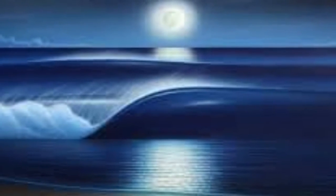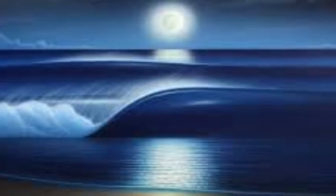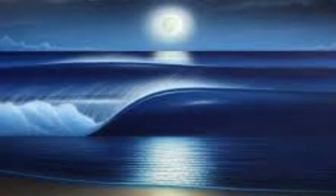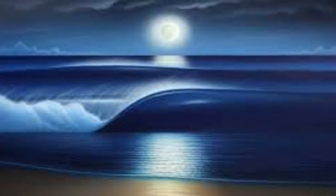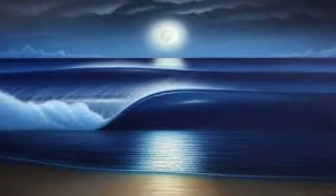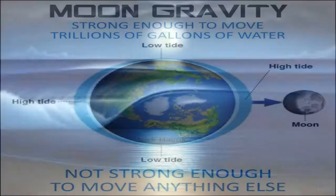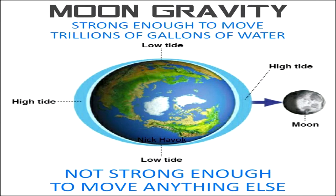Isaac Newton theorized, and it is now commonly taught and believed, that Earth's ocean tides are caused by gravitational lunar attraction. The Moon's gravity allegedly generates something called tidal force, which causes Earth and its water to bulge out, not only on the side closest to the Moon, but also the side farthest from the Moon.